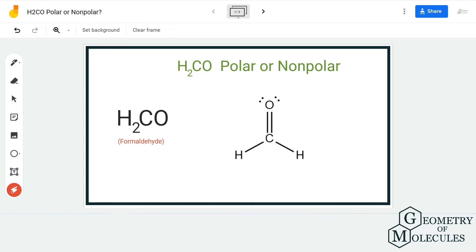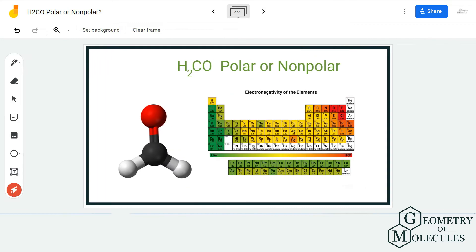Once you know the Lewis structure, we need to know the difference of electronegativities between all these atoms in the molecule.